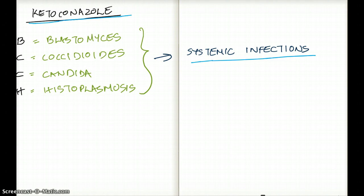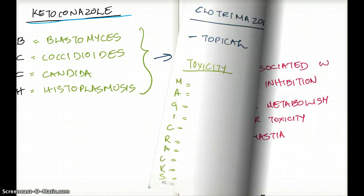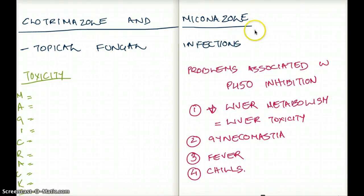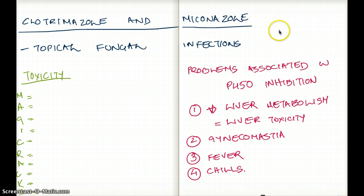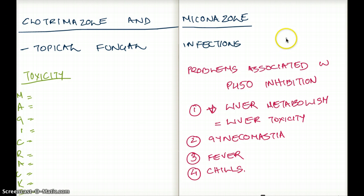What about clotrimazole and miconazole? Clotrimazole and miconazole are used for topical fungal infections, such as candida infections or candida vaginitis. Any topical fungal infections are commonly treated with clotrimazole or miconazole.